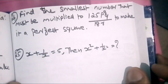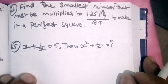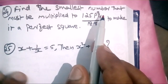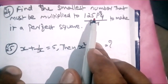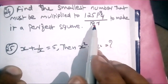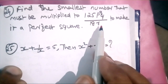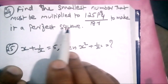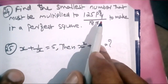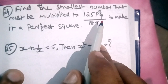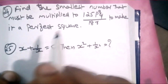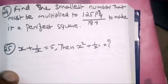Question number 24: Find the smallest number that must be multiplied to 125 P raised to 8 Q divided by 18 R to make it a perfect square.